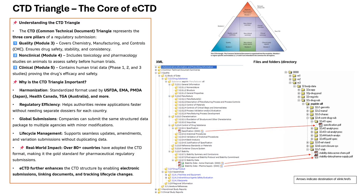And then there's clinical, module 5. This is where all the human trial data lives — from early phase 1 trials to the large-scale phase 3 studies. Regulators assess this to decide if the drug is safe and effective. The CTD triangle is a global standard adopted by FDA, EMA, PMDA, Health Canada, TGA and many other agencies. Pharma companies can now submit the same structured dossier worldwide, speeding up approvals. With ECTD, documents are linked, lifecycle changes are tracked and submissions are error-free.